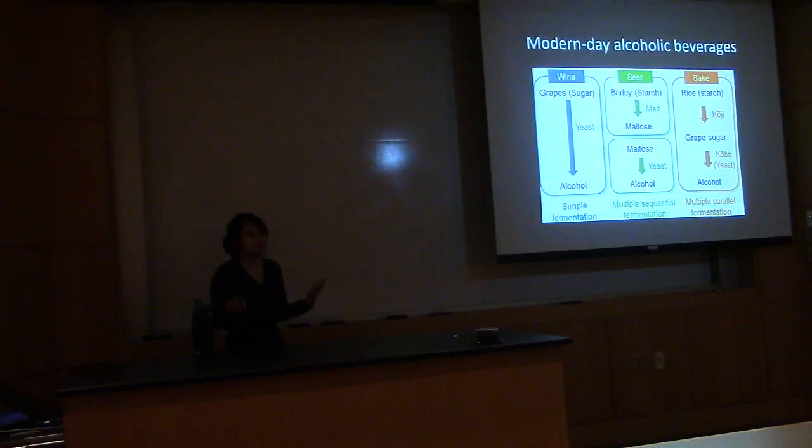When we think of modern-day alcohol beverages, we usually think of beer, wine, sake, and spirits which are created via distillation. Wine, beer, and sake are all produced via fermentation processes. We have starting materials: grapes for wine, barley for beer, and rice for sake. The starches in those starting materials are converted to alcohol via fermentation, and more importantly, with the help of our little friend, yeast.